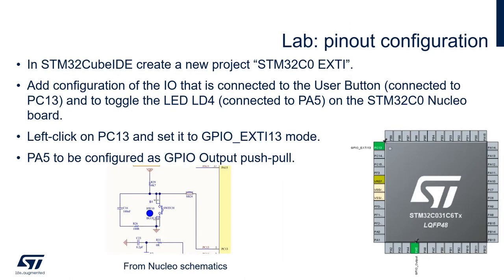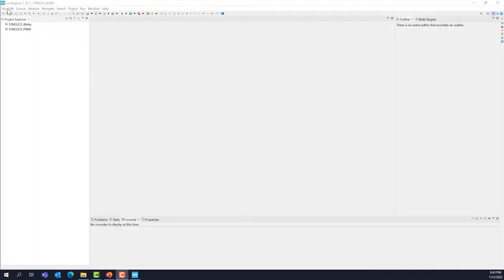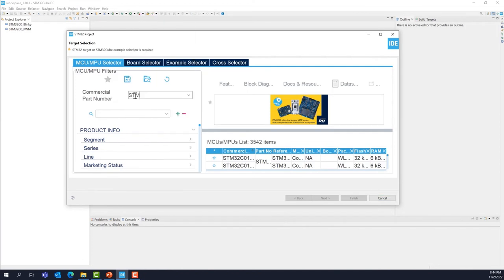It's time for the lab. In STM32 CubeIDE, we're going to create a new project called STM32 C0 EXTI. Enter the part number C031 C6 T6, select it, press next, give a name to the project — STM32 C0 EXTI — and press finish.